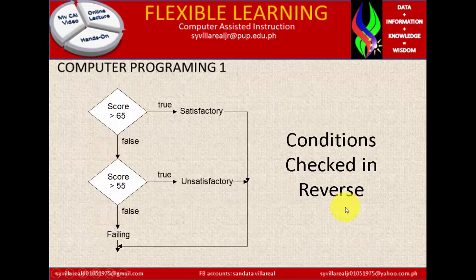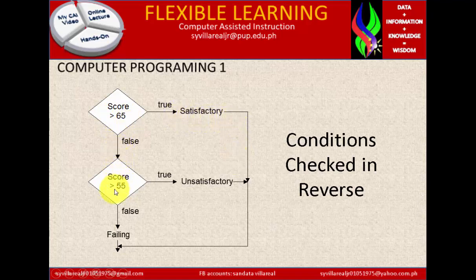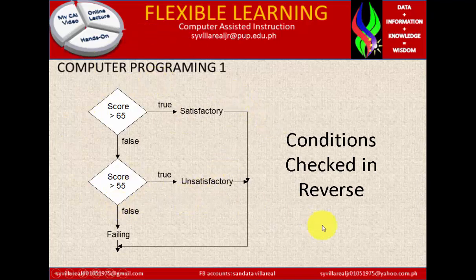Conditions check in reverse. Score is greater than 65 — before it was less than, now it's greater than. If true, satisfactory. If false, check score is greater than 55. If true, unsatisfactory. If false, it is failing. So this is considered to be a better approach than the previous one.